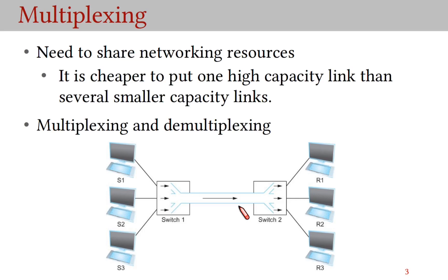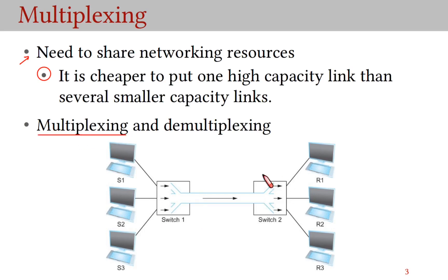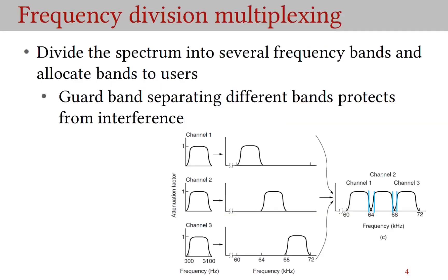One option is to connect switches with several cables and allocate one for each sender-receiver pair. However, economies of scale are at work here — it is a lot cheaper to put one high-capacity link than several smaller-capacity links, and using several cables is not scalable either. Therefore we share link capacity among several users. Switch 1 aggregates traffic from S1, S2, and S3 and sends it on the link — this process of aggregation is called multiplexing. Switch 2 distributes the aggregated traffic to R1, R2, and R3 — this process of disaggregation is called demultiplexing.